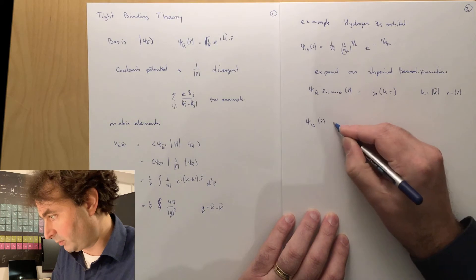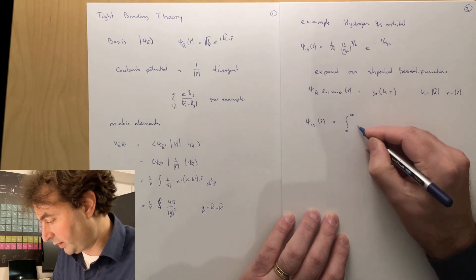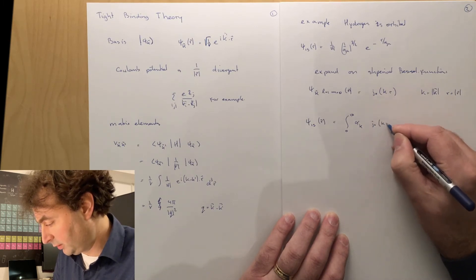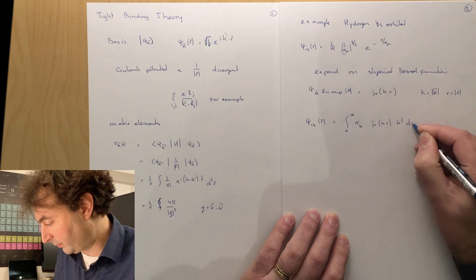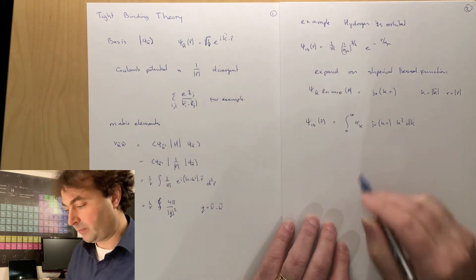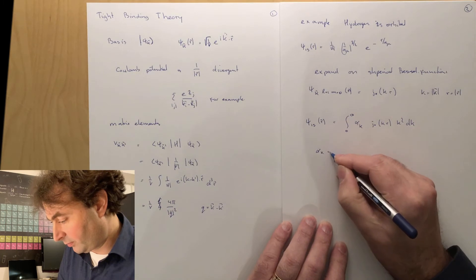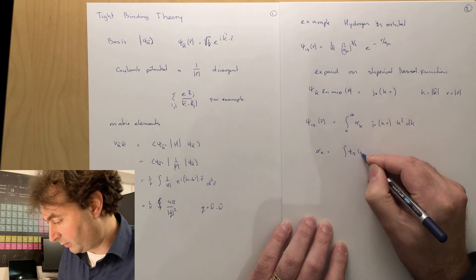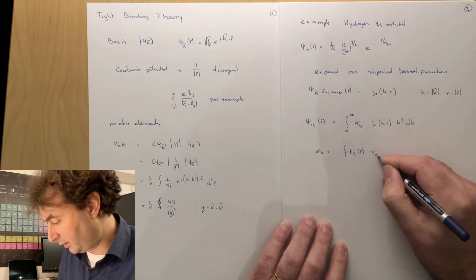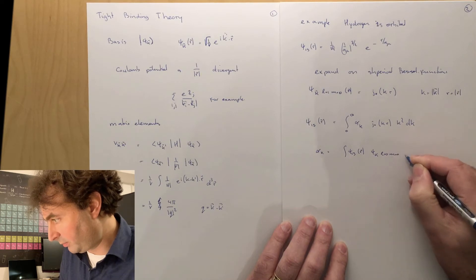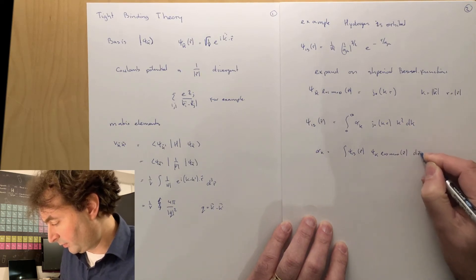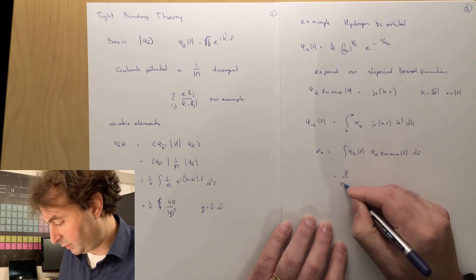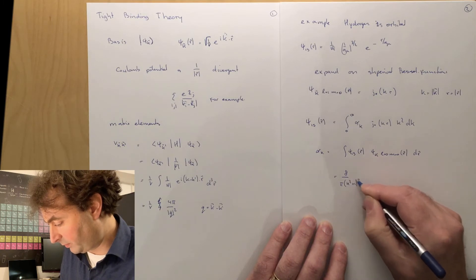So we can expand on a complete basis set by taking the inner product. So, psi 1s is the integral, 0 to infinite, alpha k, j0, kr, k squared dk, and our expansion coefficient is given by the integral psi 1s r, psi k, l is 0, m is 0 of r, dr, which is 8 over pi, k squared plus 1 squared.